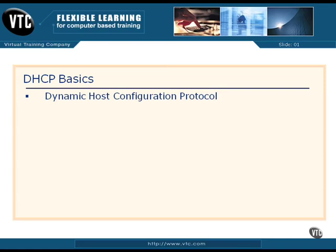DHCP stands for Dynamic Host Configuration Protocol, and it means just exactly what it says. Every computer on our network has to have a unique IP address, a subnet mask, a default gateway, and DNS information. In the early days of networking, we configured every machine manually with static addresses, which was a huge pain — administrators would fat-finger addresses, and we would inadvertently give two machines the same IP address.